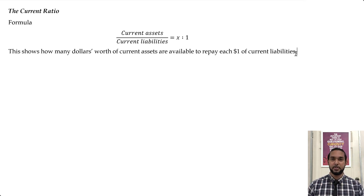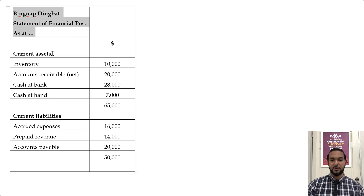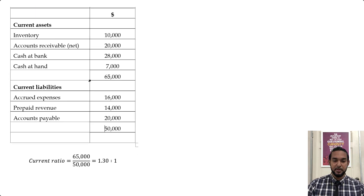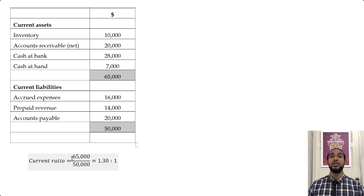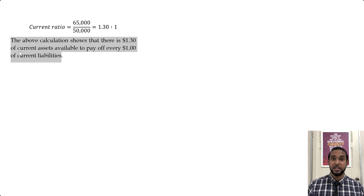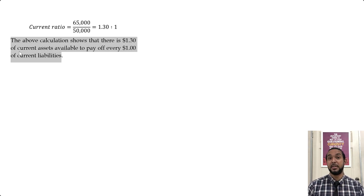Let's look at the example. We're looking at Bignap Dingbat's statement of financial position. Current assets — inventory, accounts receivable, cash at bank, cash at hand — total 65,000. Current liabilities — accrued expenses, prepaid revenue, accounts payable — total 50,000. To calculate the current ratio, we take total current assets divided by total current liabilities: 65 over 50, which is 1.3 to 1. This means there is a dollar and 30 cents of current assets available to pay off every dollar of current liabilities. The business is relatively liquid.